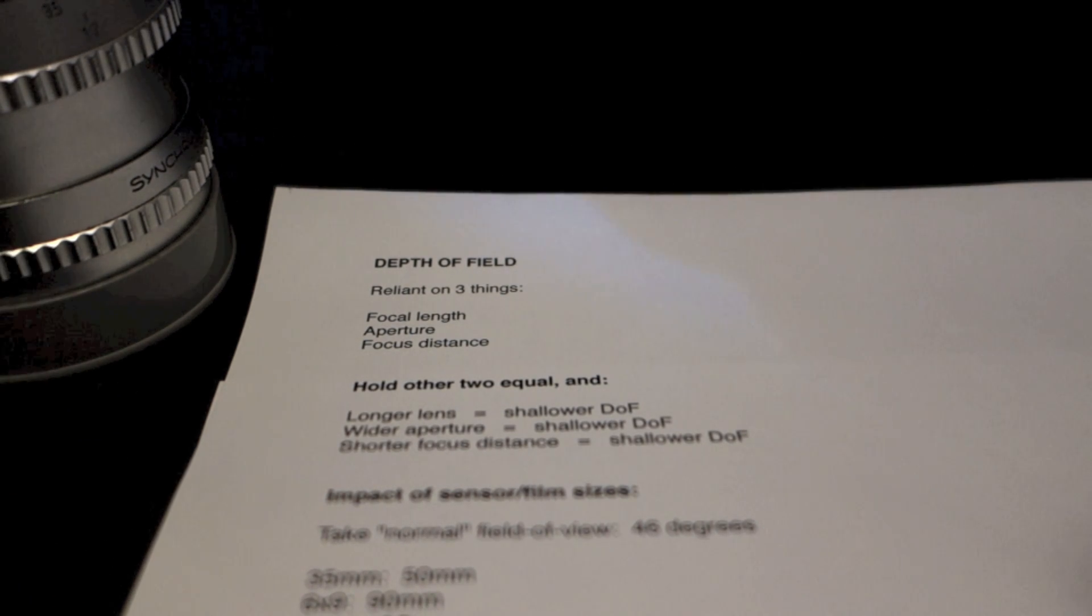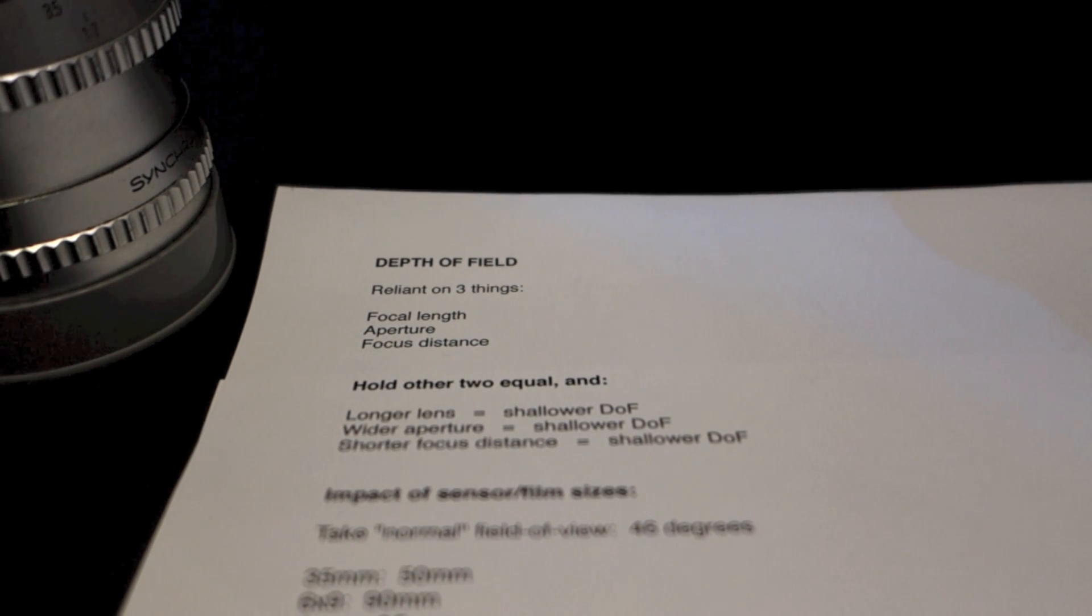There's a flip side to depth of field. It's not always shallow that we want. So you get deep depth of field by shortening your lens, closing down your aperture, or lengthening your focus distance.